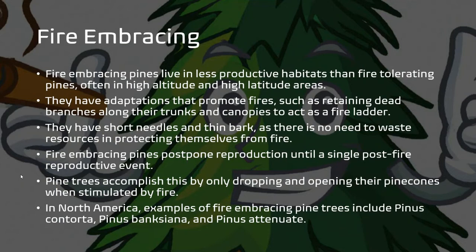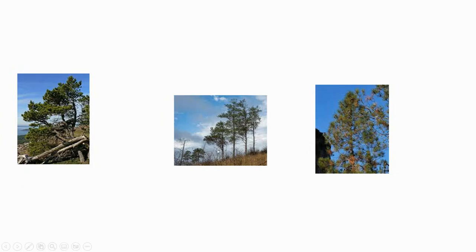Fire-embracing pines are pine trees that live in less productive habitats and have adaptations that promote fire, such as retaining dead branches along their trunks and canopies. They have short needles and thin bark and postpone reproduction until a single post-fire reproductive event. They only drop and open their pine cones when stimulated by fire. Examples of fire-embracing pines in North America include Pinus contorta, Pinus banksiana, and Pinus attenuata. You can see how they keep their dead branches on the lower part of their trunk to act as a fire ladder.